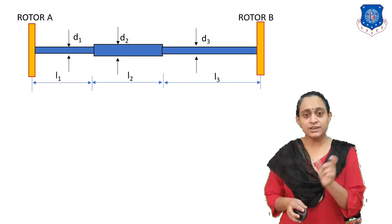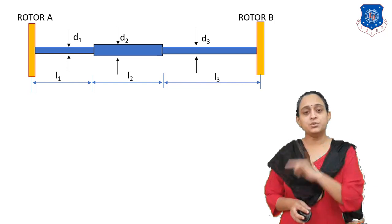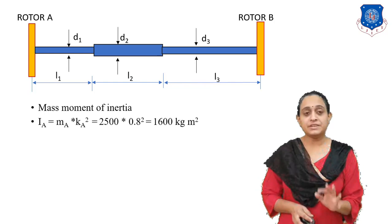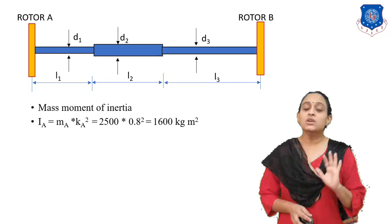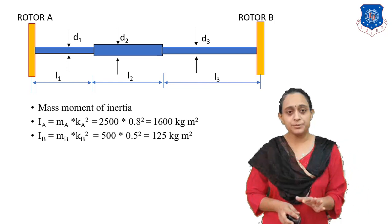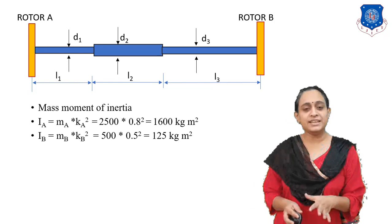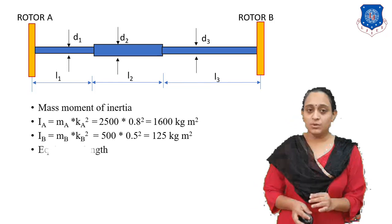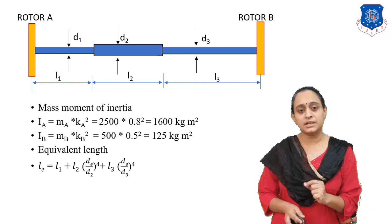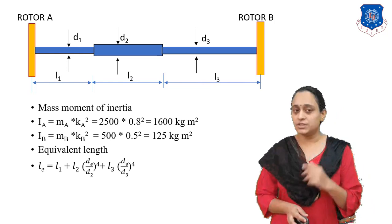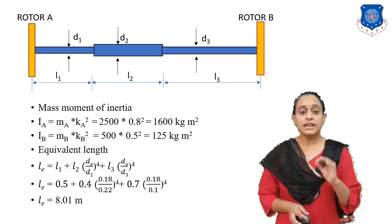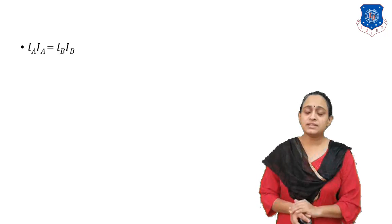The system has rotor A and rotor B with lengths L1, L2, L3 and diameters D1, D2, D3. We calculate the mass moment of inertia: I_A equals M_A times k_A squared, giving 1600 kg·m². I_B equals M_B times k_B squared, giving 125 kg·m². Now solving for the equivalent length using L_E equals L1 plus L2 times (D_E by D2) raised to 4 plus L3 times (D_E by D3) raised to 4, we get the final equivalent length as 8.01 m.